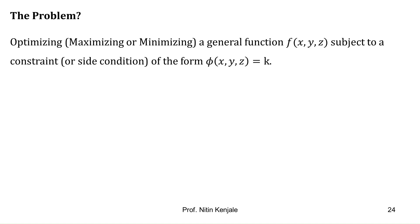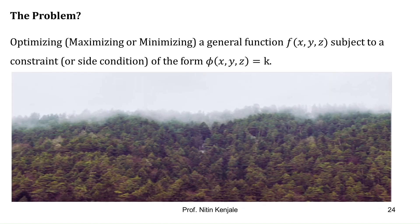Let us understand the problem that can be solved using this method. The problem of optimizing a general function f subject to a constraint of the form phi equal to k shall be solved using Lagrange's method. To understand this, consider a forest full of trees. The function f represents the surface of this forest. The maximum value of f is at the peak of the tallest tree, and the minimum value is at the peak of the smallest tree. Now if we find the maxima and minima of f at a particular section of the forest — say denoted by a circle — then the equation of that circle plays the role of the constraint, which is phi of x, y, z equal to k.